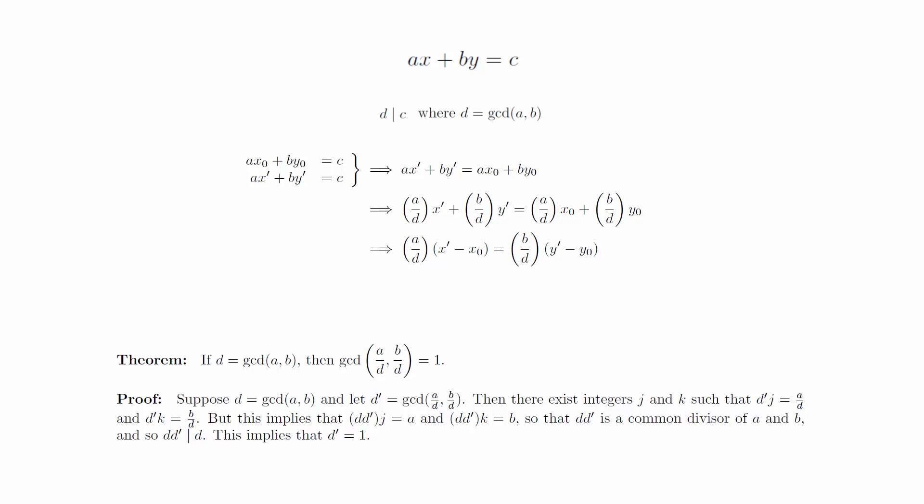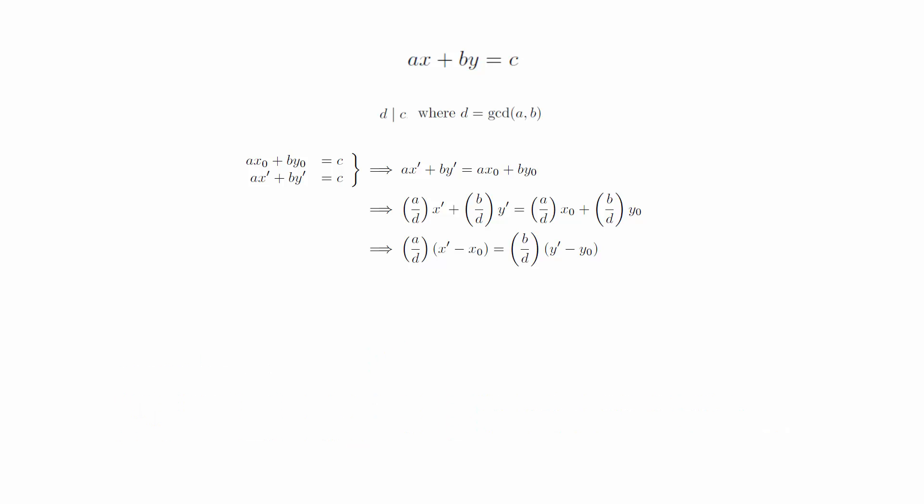It can be shown that if d equals the GCD of a and b, then the GCD of a over d and b over d is 1. Therefore, by Theorem 2-3, we have that b over d divides x prime minus x0. This means that there exists an integer t satisfying this equation, which can be rewritten like this.